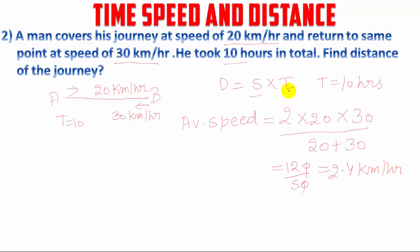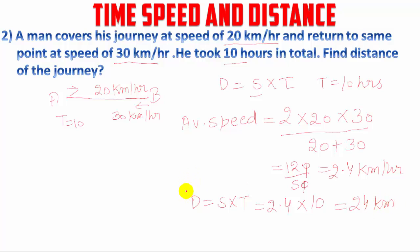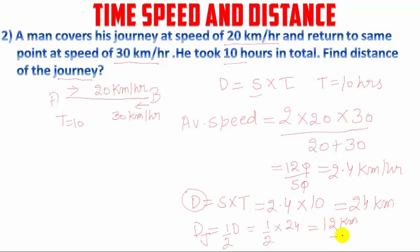Now we know the time, so we can calculate the distance. Distance equals speed multiplied by time — speed is 24 km/h and time is 10 hours — giving us 24 km. But this distance is for A to B and back to A, the total round trip. We need just the one-way journey distance, so it is half of 24, which gives us 12 km. That is our answer.